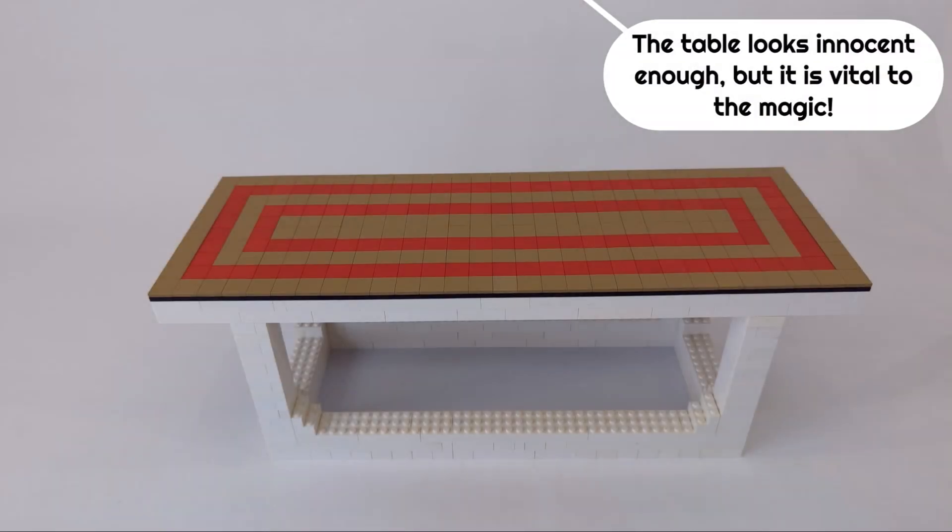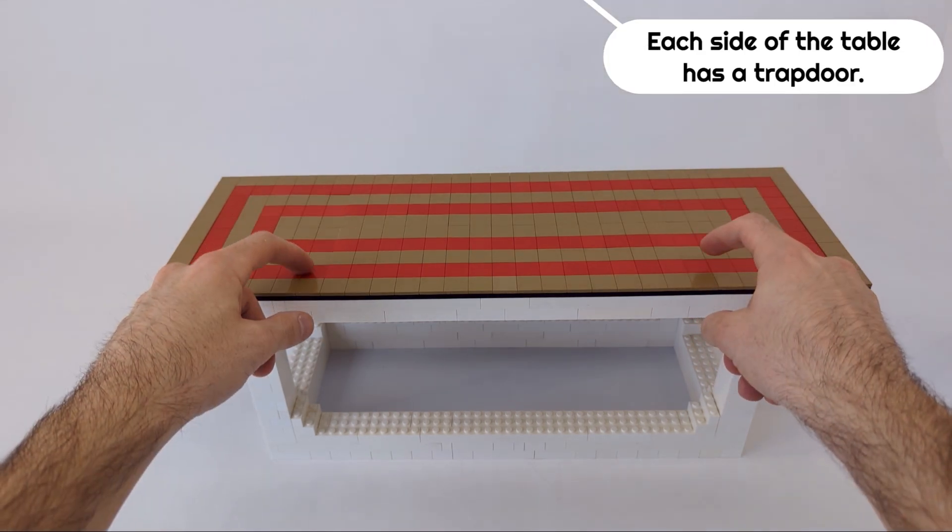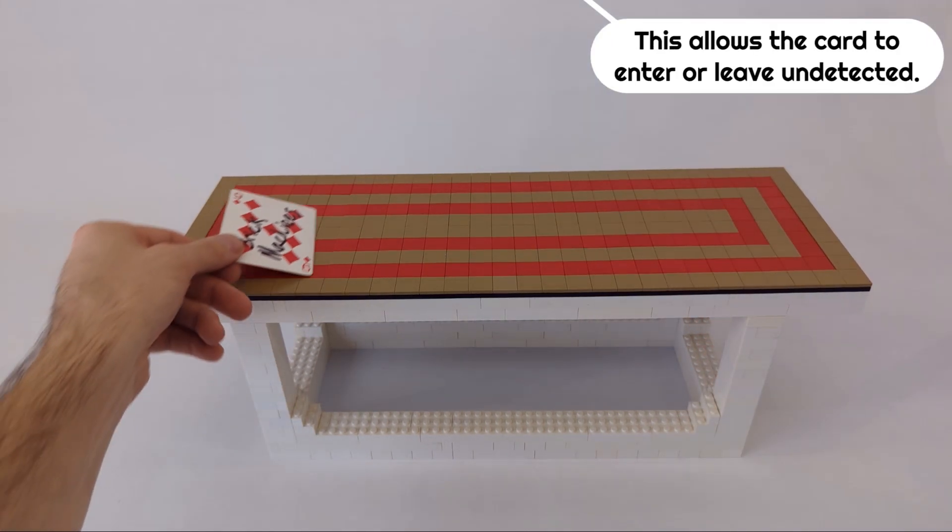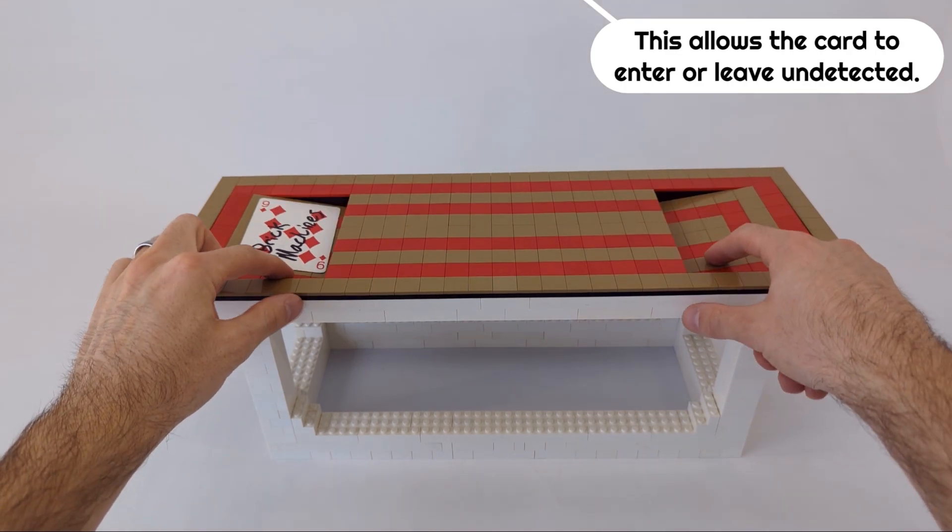The table looks innocent enough, but it is vital to the magic. Each side of the table has a trap door. This allows the card to enter or leave undetected.